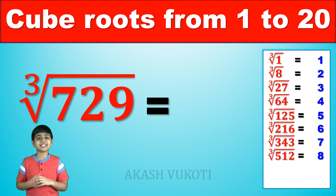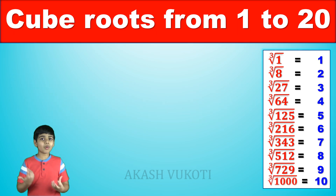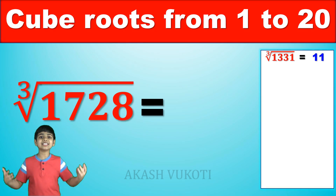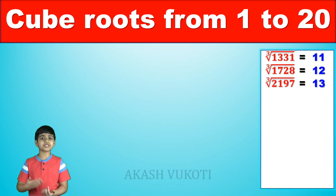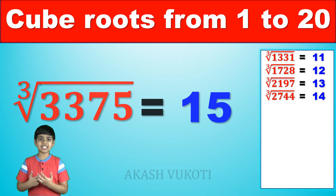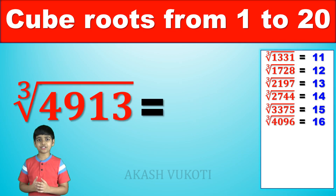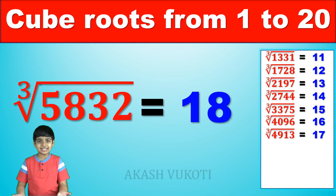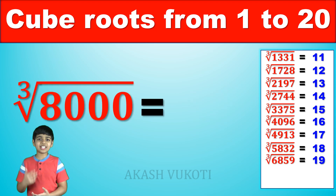The cube root of 512 is 8. The cube root of 729 is 9. The cube root of 1,000 is 10. The cube root of 1,331 is 11. The cube root of 1,728 is 12. The cube root of 2,197 is 13. The cube root of 2,744 is 14. The cube root of 3,375 is 15. The cube root of 4,096 is 16. The cube root of 4,913 is 17. The cube root of 5,832 is 18. The cube root of 6,859 is 19. And finally, the cube root of 8,000 is 20.